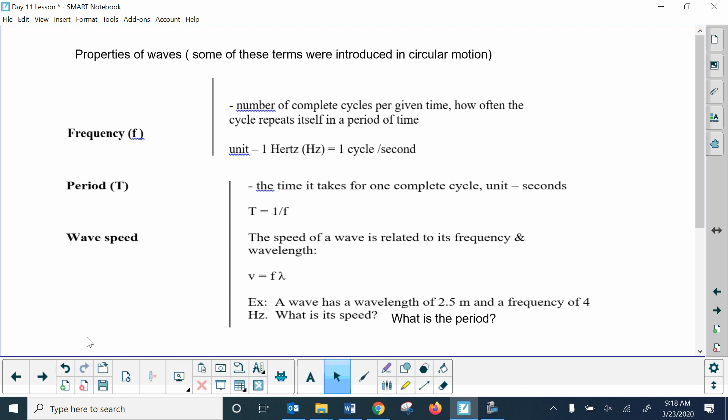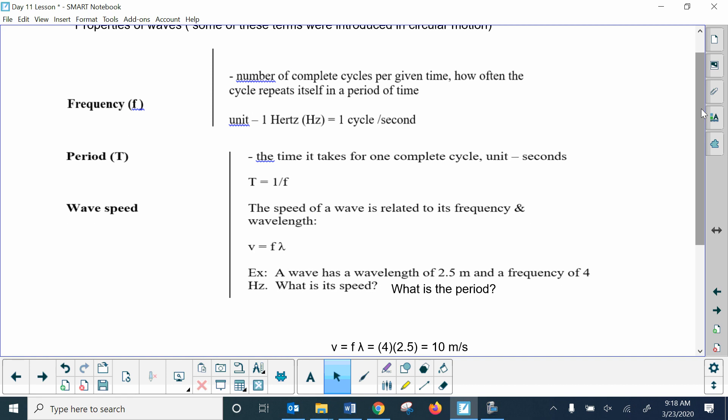Some other properties of waves that you should know about, and a lot of these we introduced during that circular motion unit. Frequency is lowercase f, and it's the number of cycles that are given in a period of time. How often a cycle repeats itself? In this case, it would be how often the oscillation occurs or the vibration occurs per unit of time, and that's measured in hertz. Period is the inverse of that, it's the time for one complete cycle, and that unit's in seconds. Wave speed, you multiply the frequency times the wavelength. If you know those two things, you can figure out the wave speed.